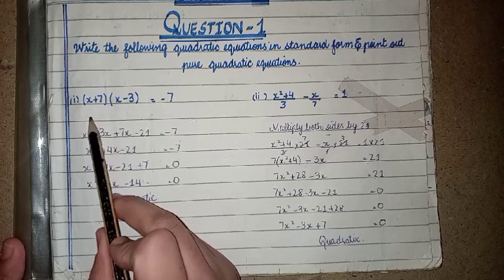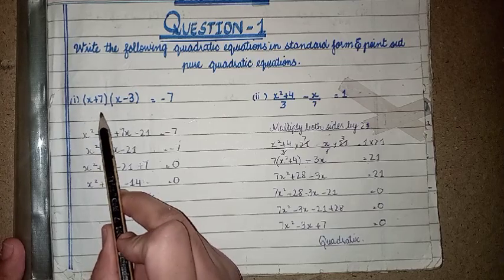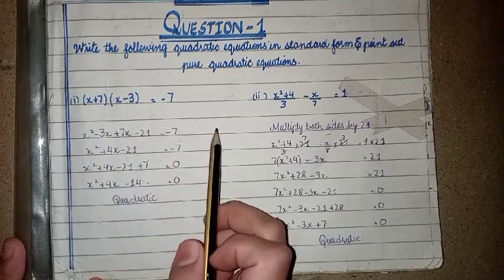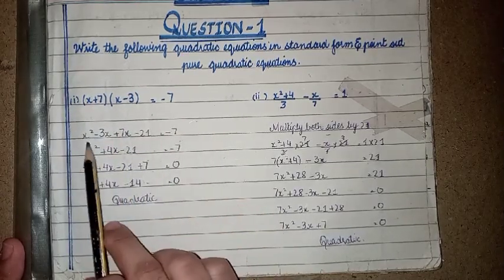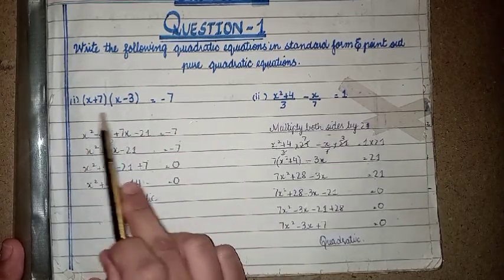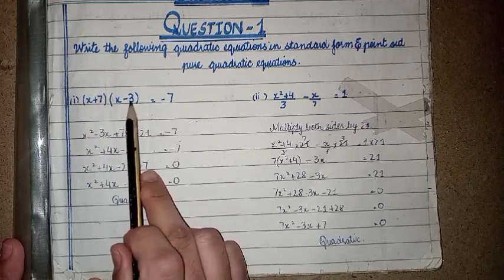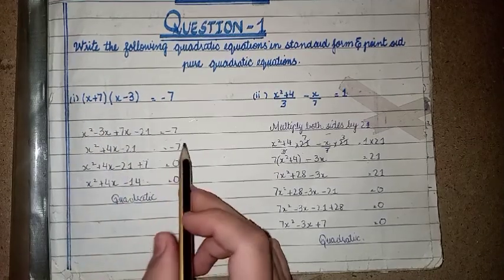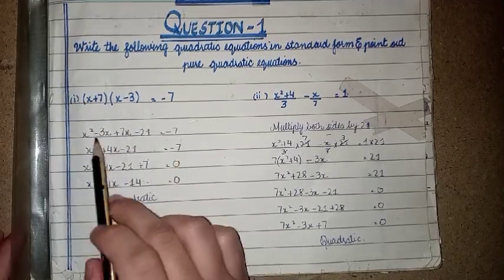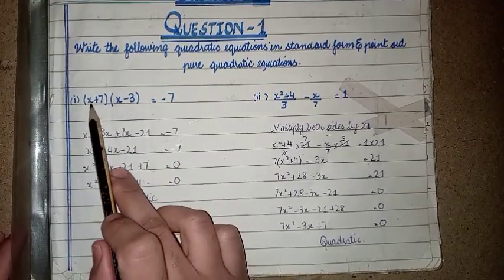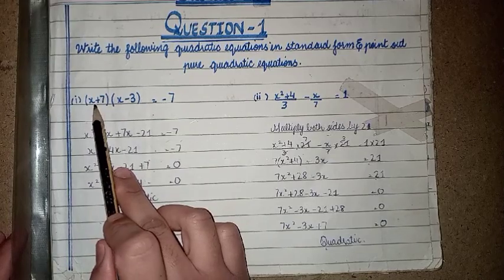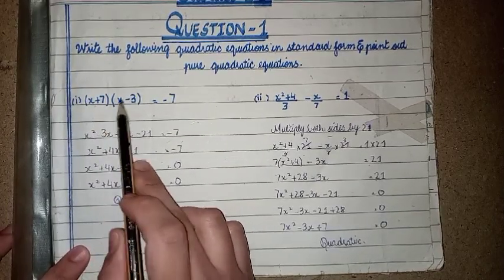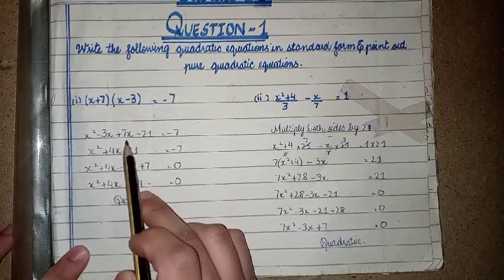The first question is: (x + 7)(x - 3) = -7. Simply we have to multiply this with this. To expand the equation, x times x equals x squared, minus 3x.